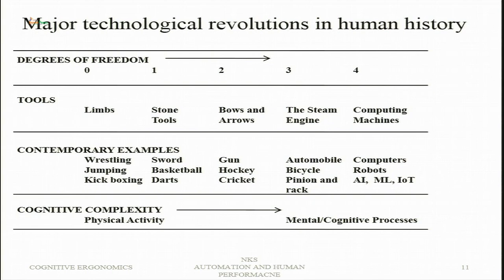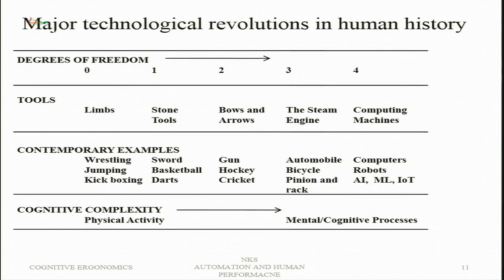In computers, what is handled is information — not objects — so what moves is information. Whereas in 3 degrees of freedom, a rotary motion is converted into linear motion. The transfer of energy from one tool to another, from one location to another, the transfer of information, and the number of tools intervening between the human body and the final goal define the degrees of freedom and identify the level of technology development. On the basis of these examples, we talked about cognitive complexity.